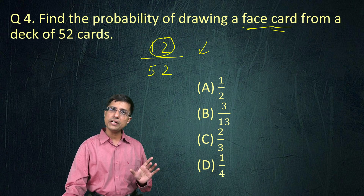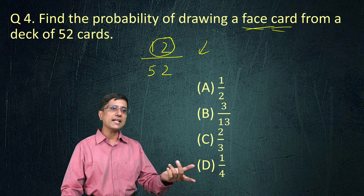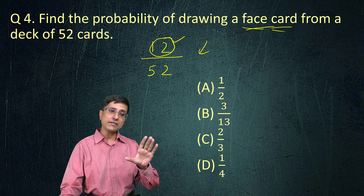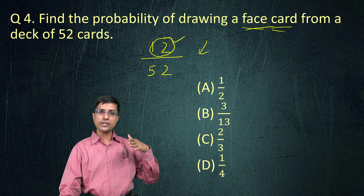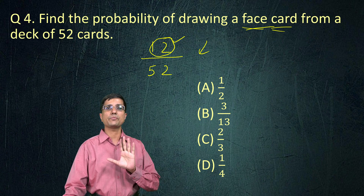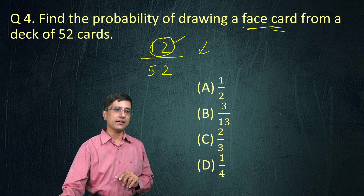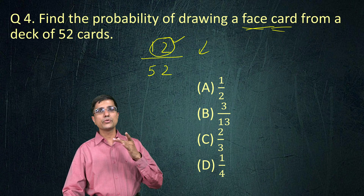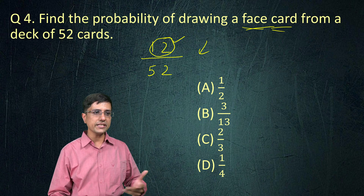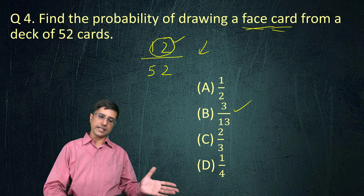So what does probability mean here? If I do this experiment 52 times, 12 times I will get a face card. So what are the chances of getting a face card in one drawing? By unitary method: for 52 you get 12, so for 1 you get 12 by 52. That is the probability. If you simplify it, the answer comes out to be 3 by 13, which is the correct answer.